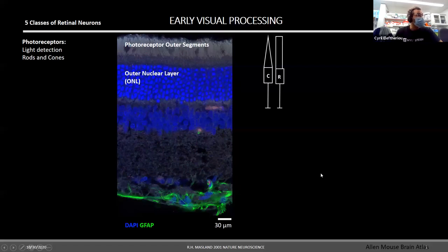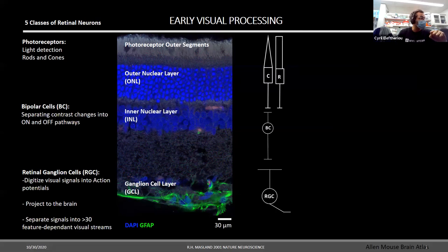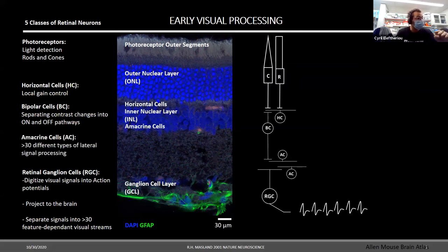So first of all, as you all know, and as Bishri introduced earlier, retinal visual processing arises from five classes of neurons. Photoreceptors that detect light, the bipolar cells which separate the on and off signals, the retinal ganglion cells that digitize visual signals and project to the brain, horizontal cells which were discussed just now, and amacrine cells that perform the lateral processing. And this is the image that we see very often and that we teach in textbooks.